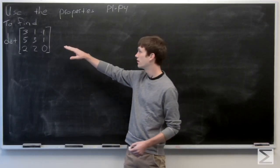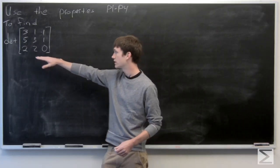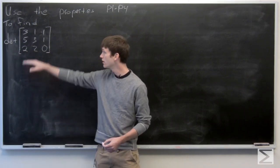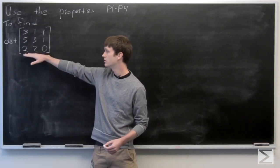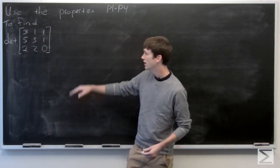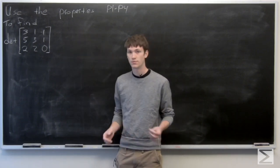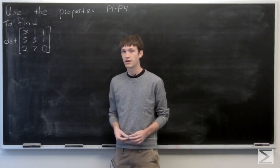In this problem, we're asked to find the determinant of a matrix: 3, 1, negative 1, 5, 3, 1, 2, 2, 0. And we're asked to use the properties of our determinant to find that.